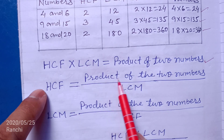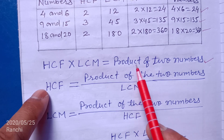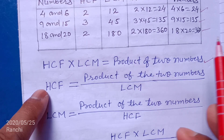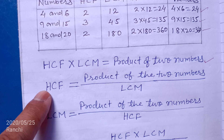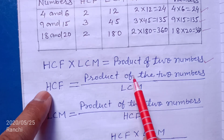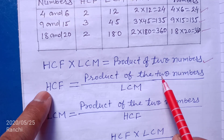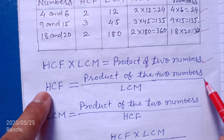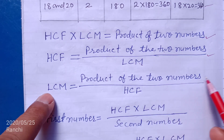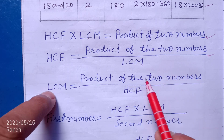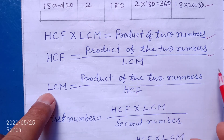HCF equal to product of the 2 numbers divided by their LCM. You can find HCF without using the prime factorization or division method — directly write HCF equal to product of two numbers divided by their LCM, because either both numbers or their product and LCM will be given. Similarly, you can find LCM: LCM equal to product of two numbers divided by HCF.